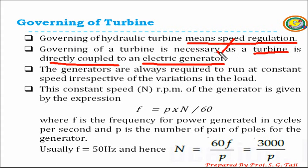Similarly, as my load is going to vary — that is, increase or decrease — my resisting torque is also going to increase or decrease. For example, if my load on the generator is going to decrease, in that case my resisting torque is also going to decrease, and in the same way my speed of the generator is going to decrease.